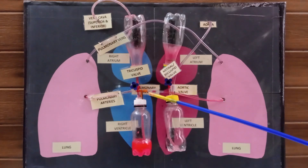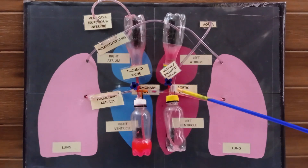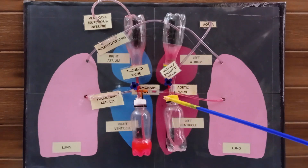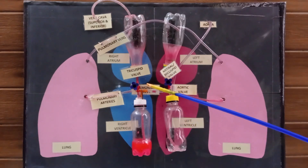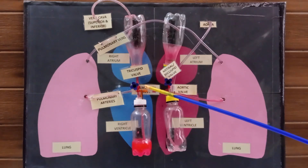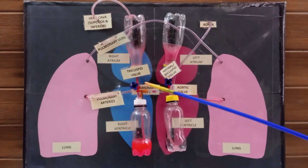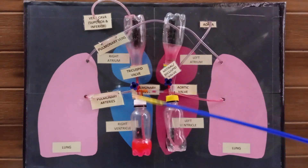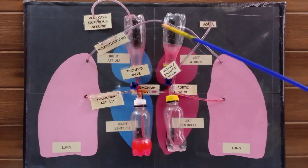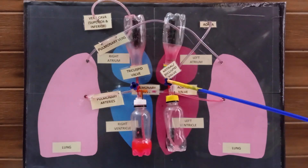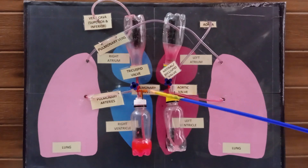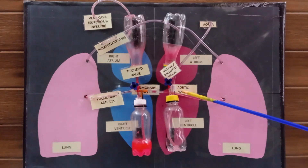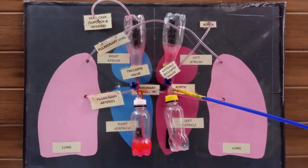The valves open and close to allow blood to flow in the right direction and prevent backflow. There are two valves that open between the atrium and ventricles on both sides of the heart, and another two valves where blood flows out of the ventricles.